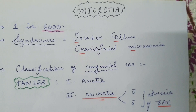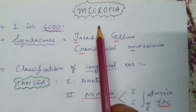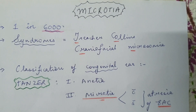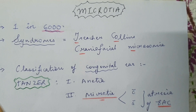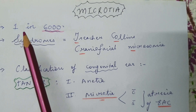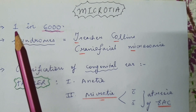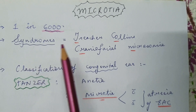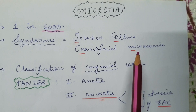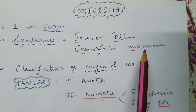Namaste and hello everyone. Today I am going to cover the topic of microtia. In the first video I will cover a little bit of the theory, and in the subsequent one I will demonstrate how to make the template, which is commonly asked in the exams. The reference book for this topic is from Neligan. Microtia is considered to be quite common — one in six thousand — and is associated quite often with certain syndromes like Treacher-Collins syndrome, craniofacial microsomia, and can also be associated with a wide spectrum as seen in VACTERL.